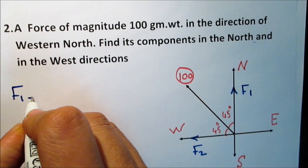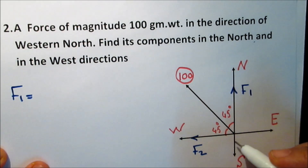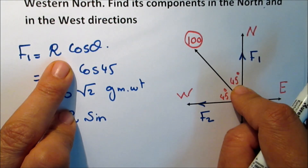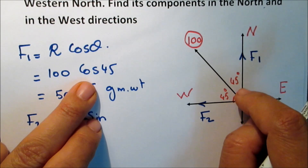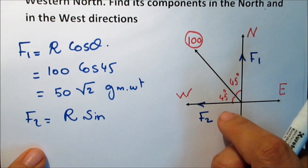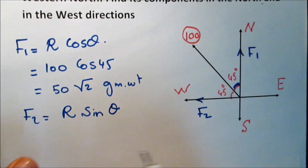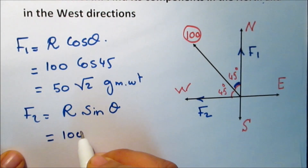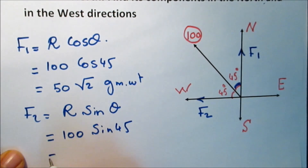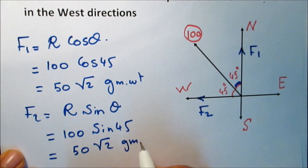Let F1 be the component in the north direction. F1 equals R·cosine of the adjacent angle, which equals 100·cosine(45) = 50√2 gram weight. Similarly, F2 equals R·sine(theta), which equals 100·sine(45) = 50√2 gram weight.